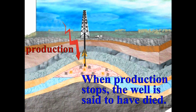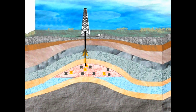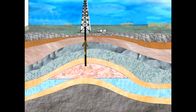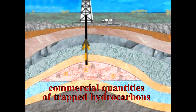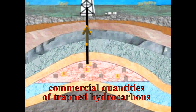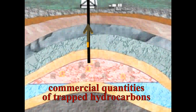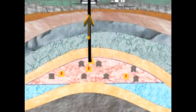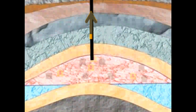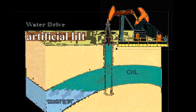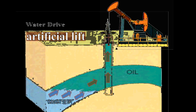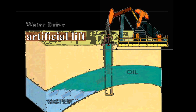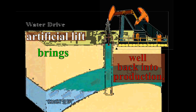When production stops, the well is said to have died. However, when a well dies with commercial quantities of valuable resources still trapped within the reservoir, alternative methods will be used to bring the well back into production. This is where artificial lift can supplement natural lift and bring the well back into production.